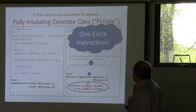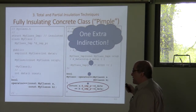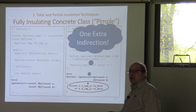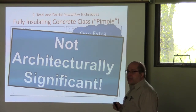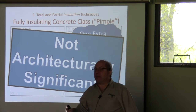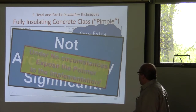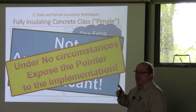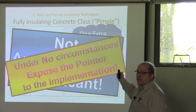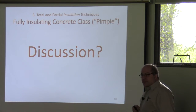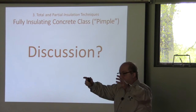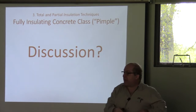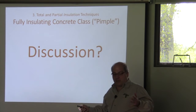There's an extra indirection with pimpl, so it's expensive — you have to allocate and deallocate memory. If you're going to insulate something, insulate it early in the development process, then relax it when things become stable. It is not architecturally significant — you can do it incrementally on a case-by-case basis and undo it incrementally. Don't ever expose the pointer — it's not for anybody else's consumption. People actually do this: they create a wrapper, then pass the implementation pointer to somebody else's implementation. That's completely wrong.